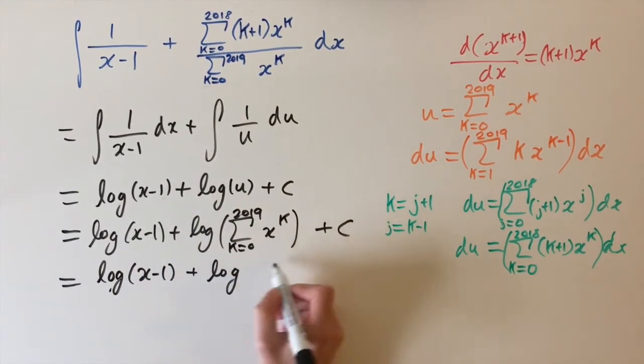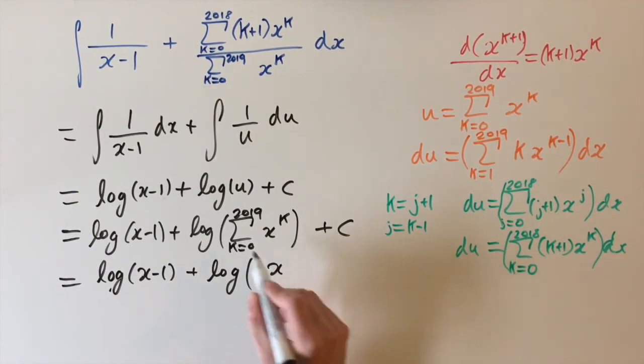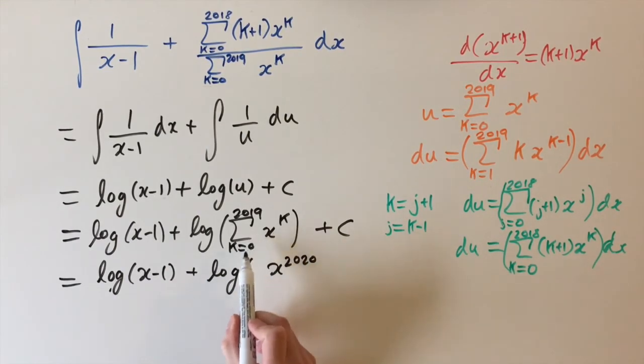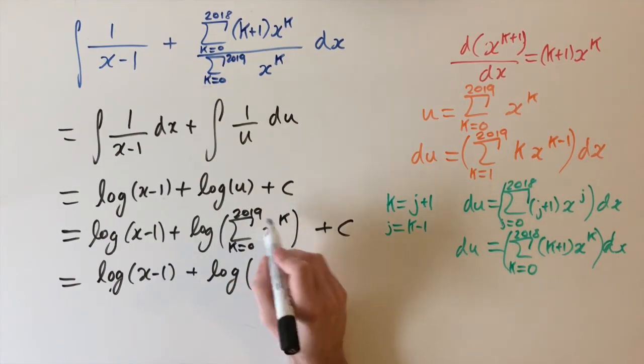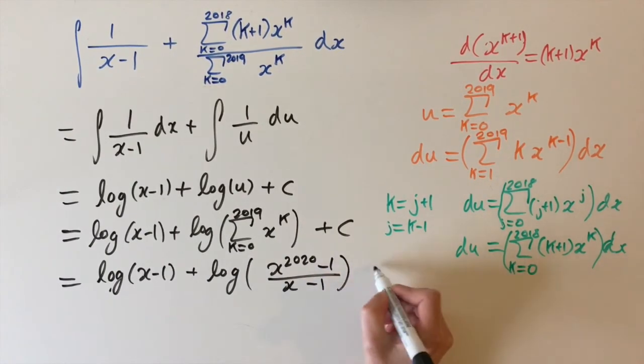And then just using the formula for the sum of the geometric series, we have x to the power of the number of terms in here. And that is 2020 because we start at k equals 0 and we have 2019. That's our upper limit. So we have actually 2020 terms in this series. And then we have this minus 1 divided by x minus 1 and plus c.